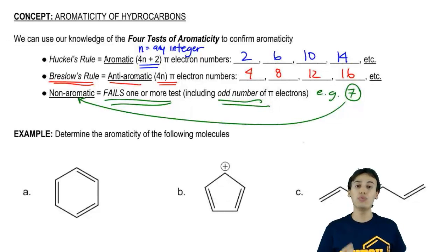You might be wondering, when would you get an odd number of pi electrons? When you have radicals because radicals count as only one.